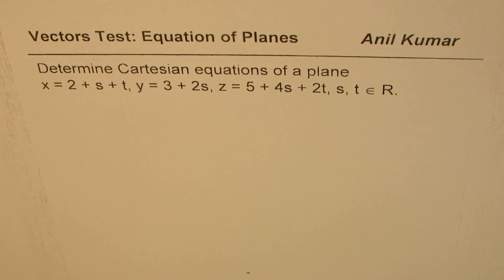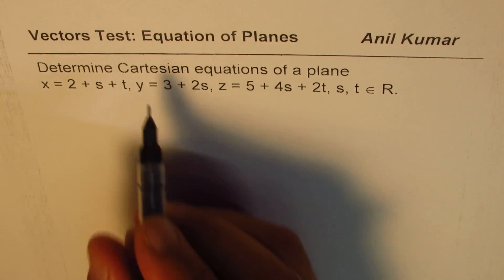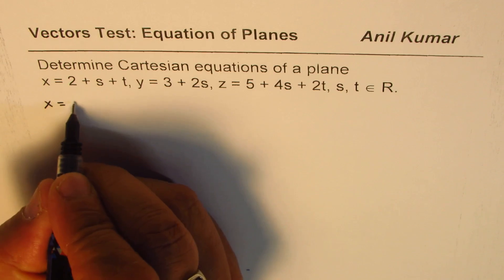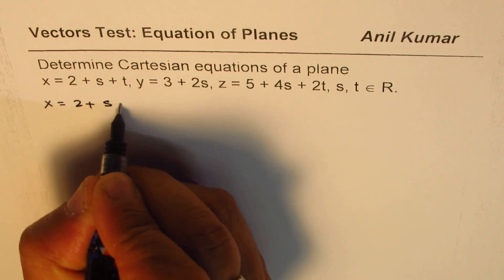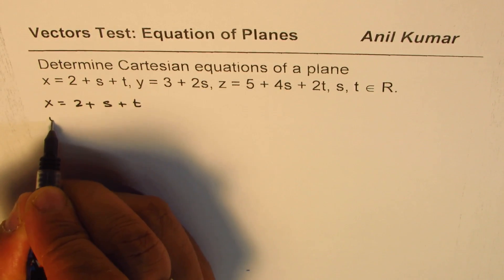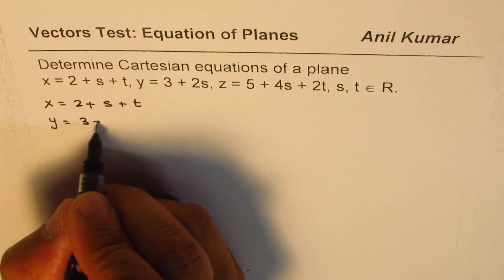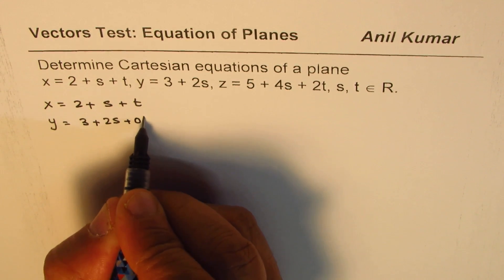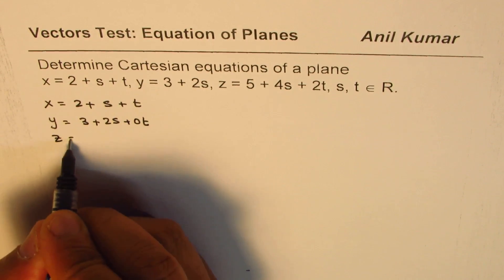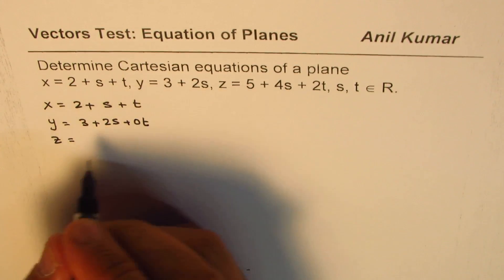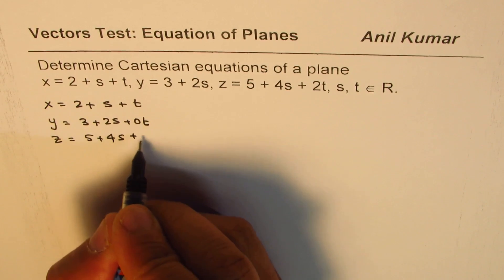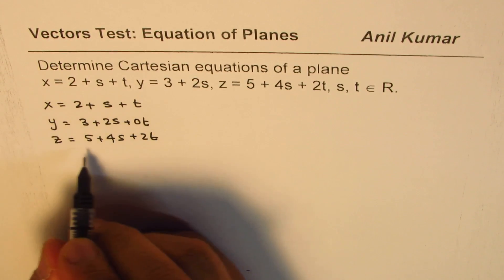From these equations, let me rewrite them. We have x = 2 + s + t, y = 3 + 2s + 0t (there's nothing in t), and z = 5 + 4s + 2t.